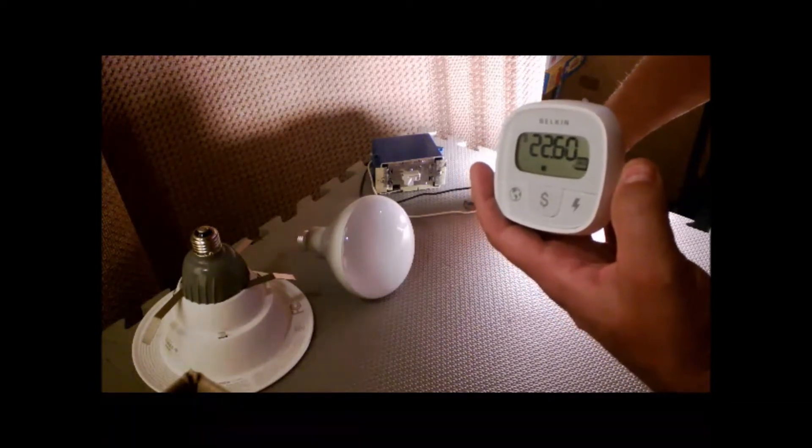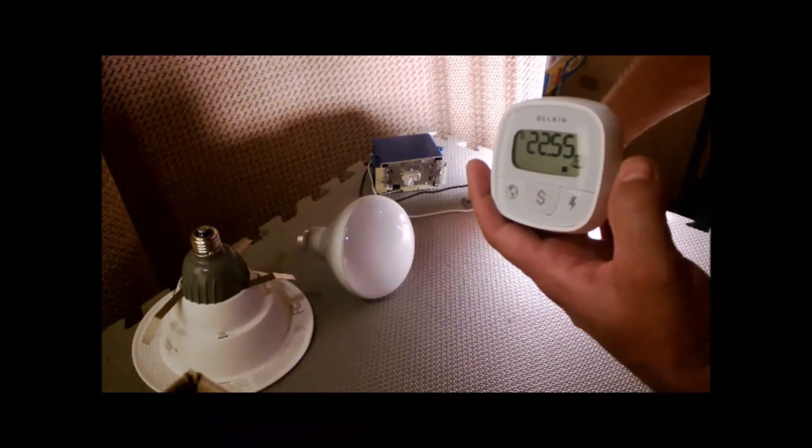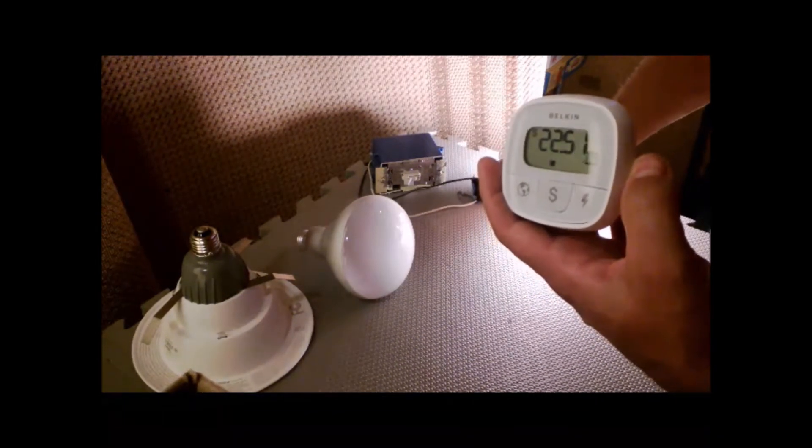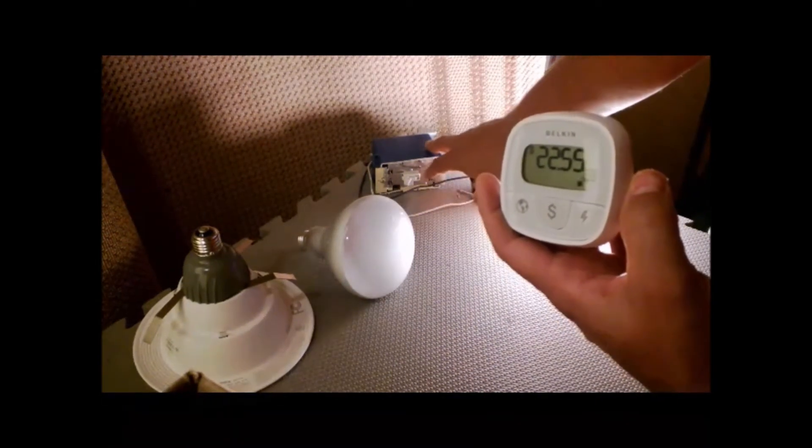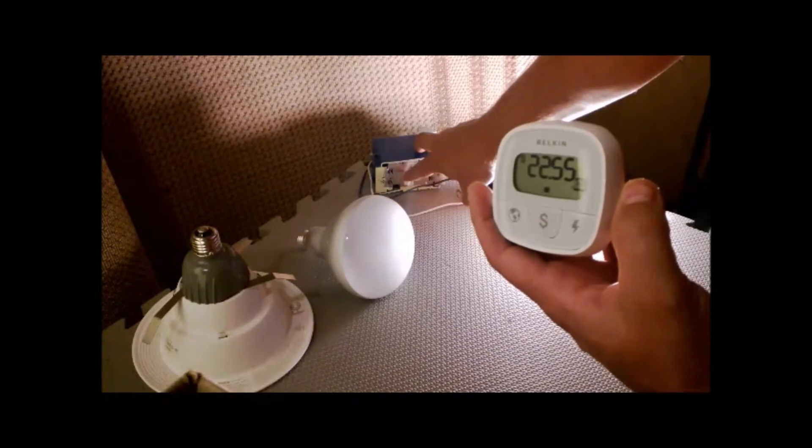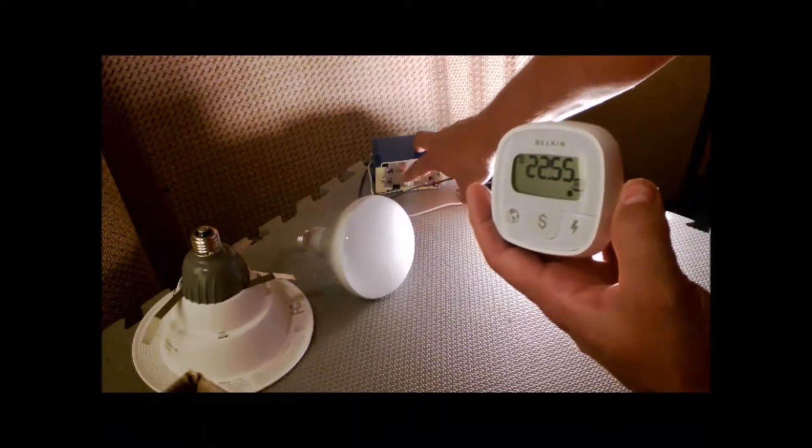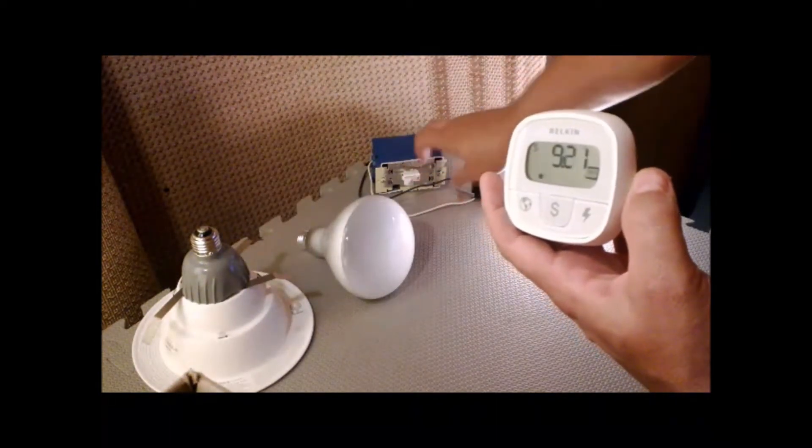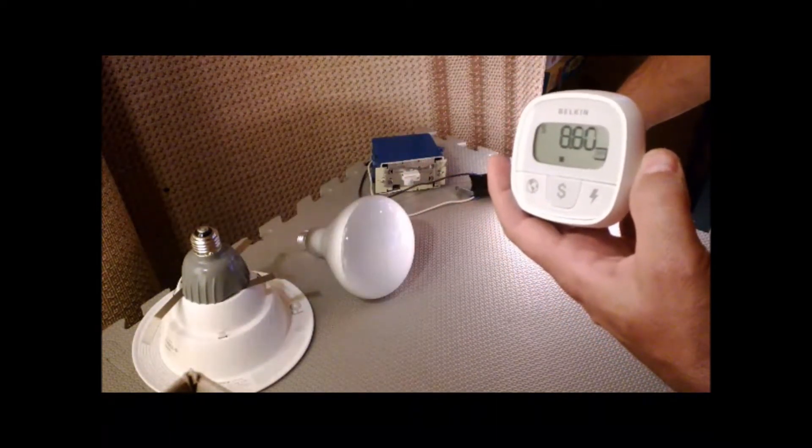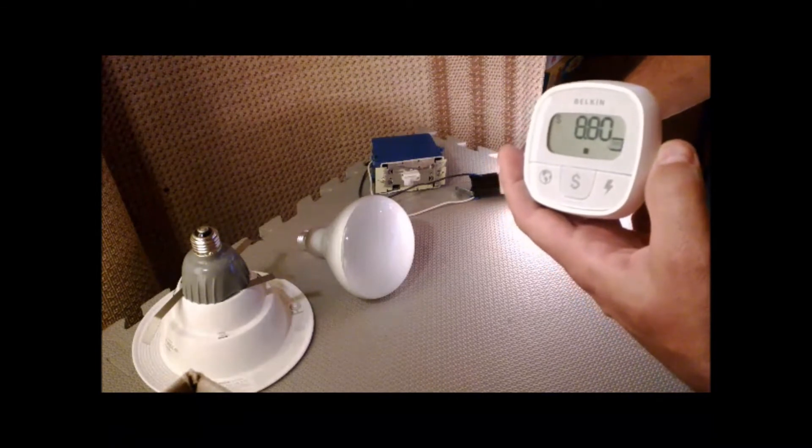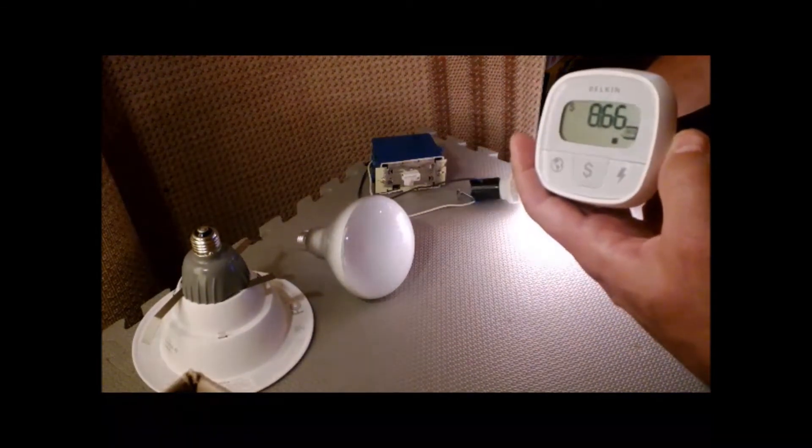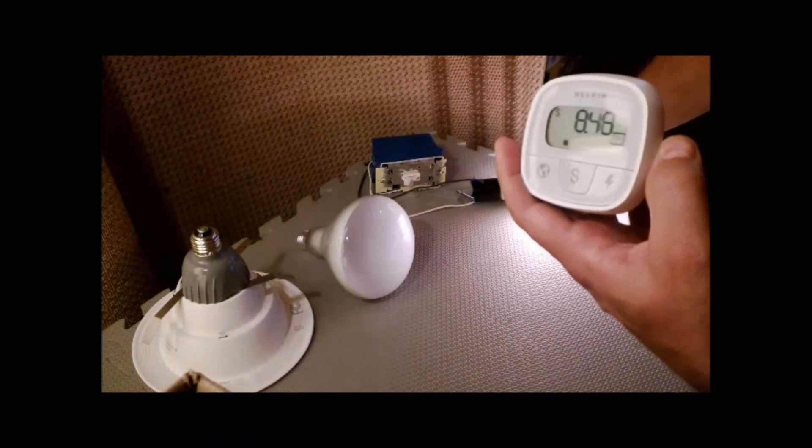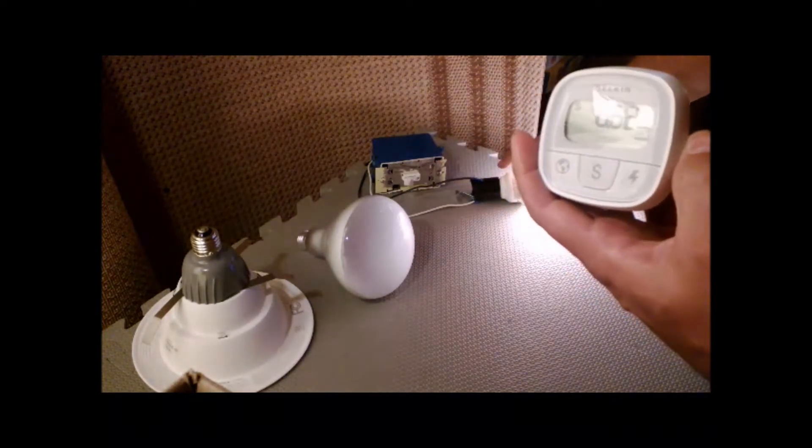Also, this compact fluorescent is not designed for dimming, so this example of dimming will not be great. But you can still get a general idea. So you can see we're almost at 23 watts. Once I bring this one down and get it down to just around eight watts, just over half. So even with a compact fluorescent you can save with a dimmer.